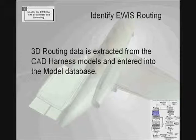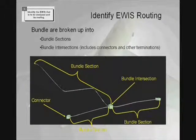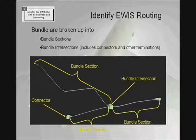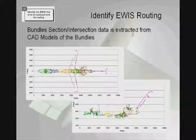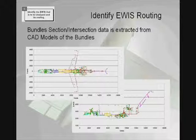This is rectified by allowing the EWIS RAT to integrate the 3D harness models created in the OEM's design. Typically, the routing of wire harnesses in aircraft design models is rather bulky. In order to properly define the routing of wires within the aircraft, it must be broken up into smaller areas, which the EWIS RAT calls bundle sections — defined as a length of harness in which no wires enter or leave and the environmental conditions remain constant. Bundle sections can be terminated at a connector or where two or more bundle sections interact, which is called a bundle intersection.